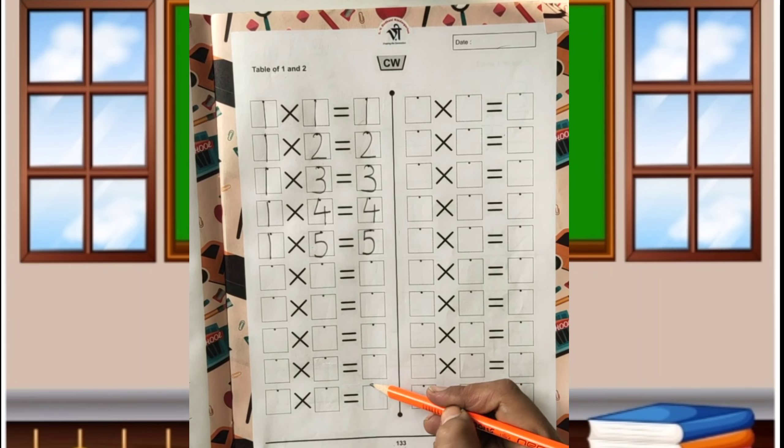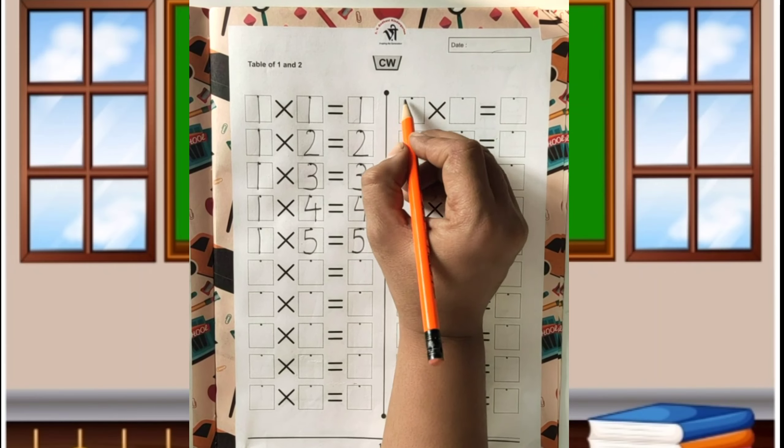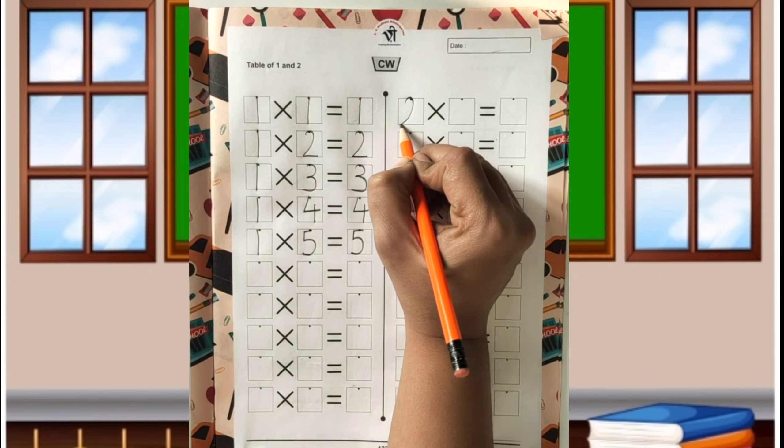This way you have to complete the table of one and now next table that is table of two.